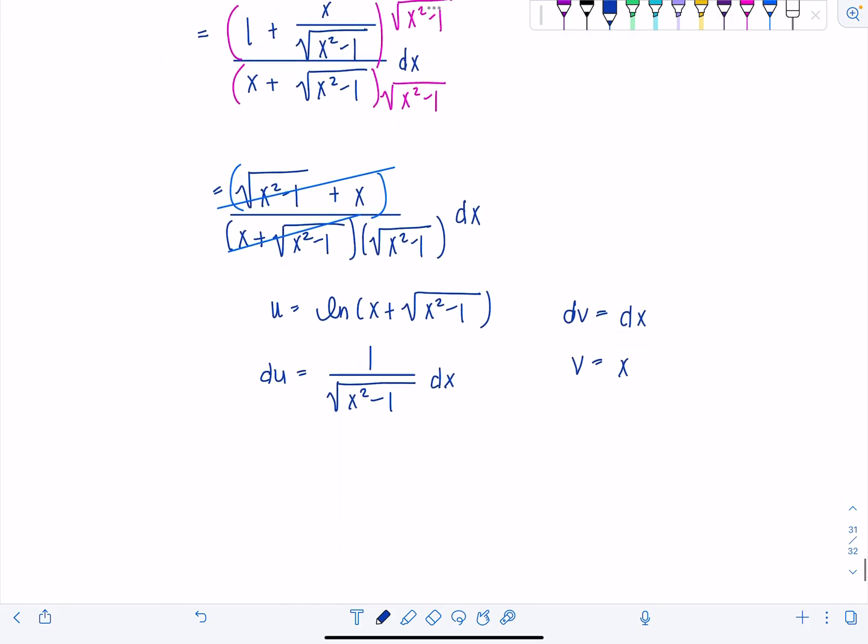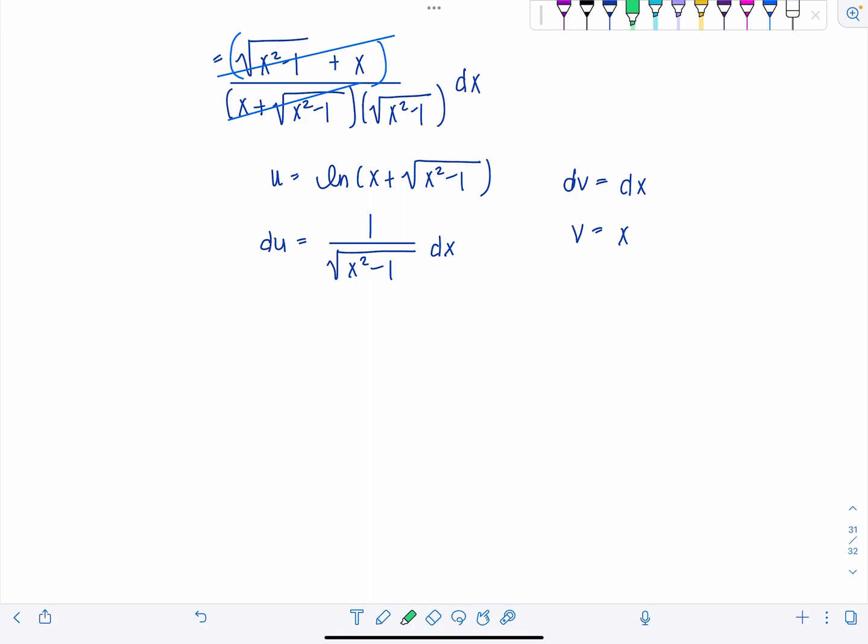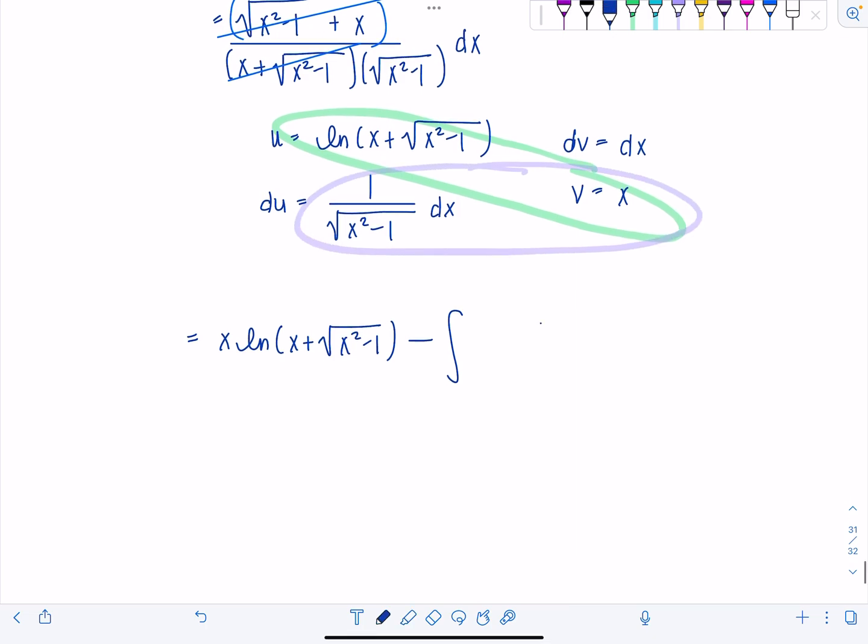Okay, let's see if this gets us anywhere. So now we have uv that we don't integrate. So just x times natural log of x plus rad x squared minus 1 minus the integral of vdu right here. So that's going to be x over rad x squared minus 1 dx. All right, how to tackle this little integral here. Oh my,